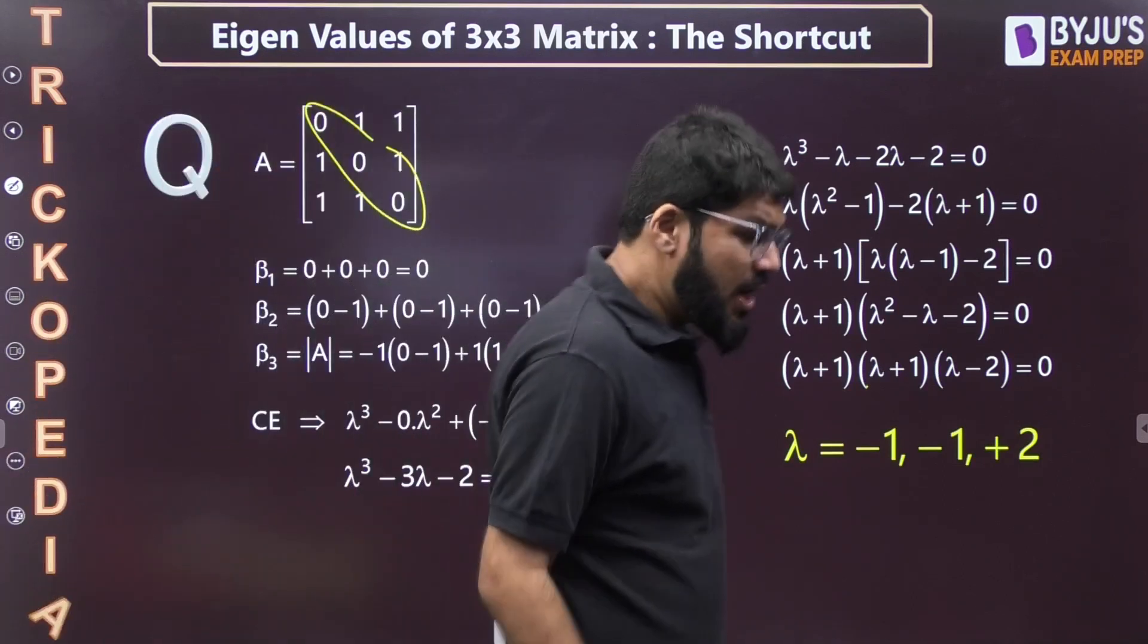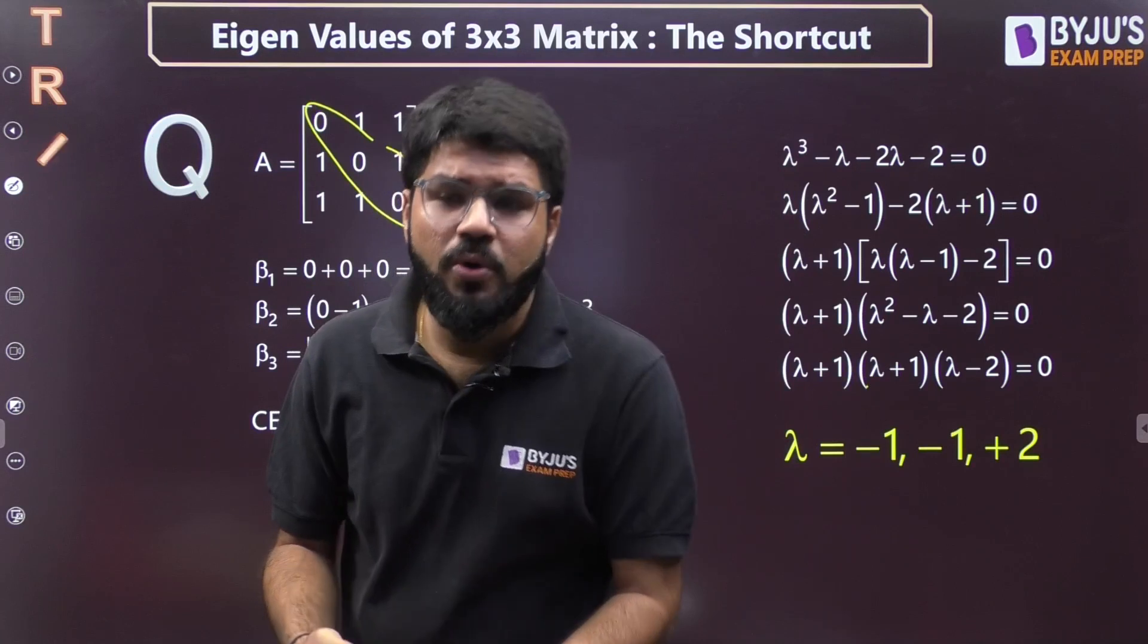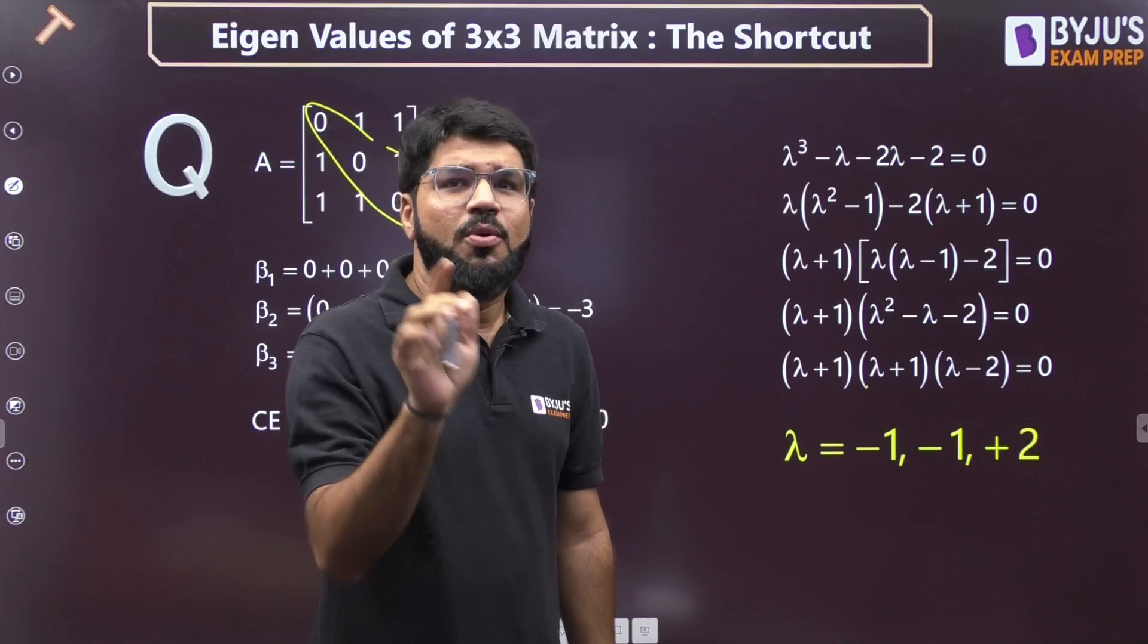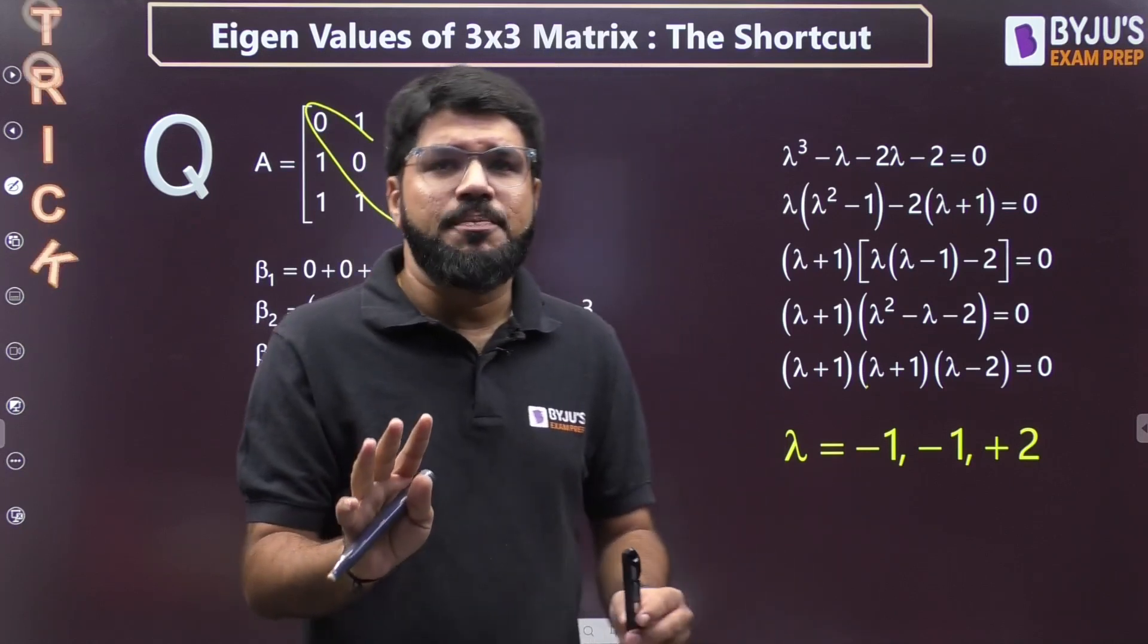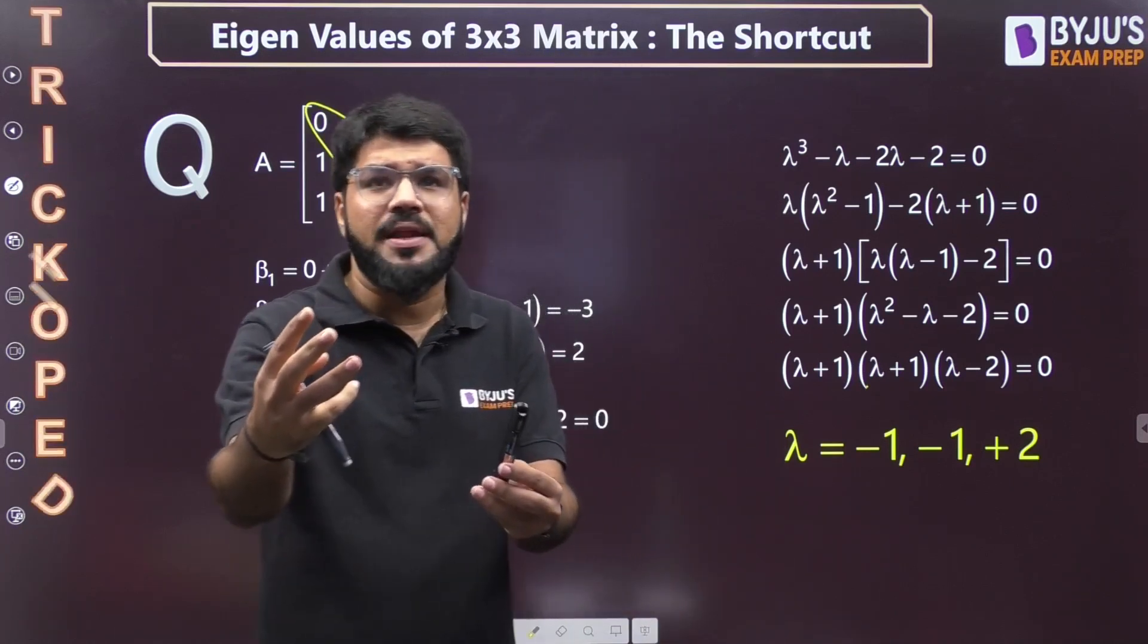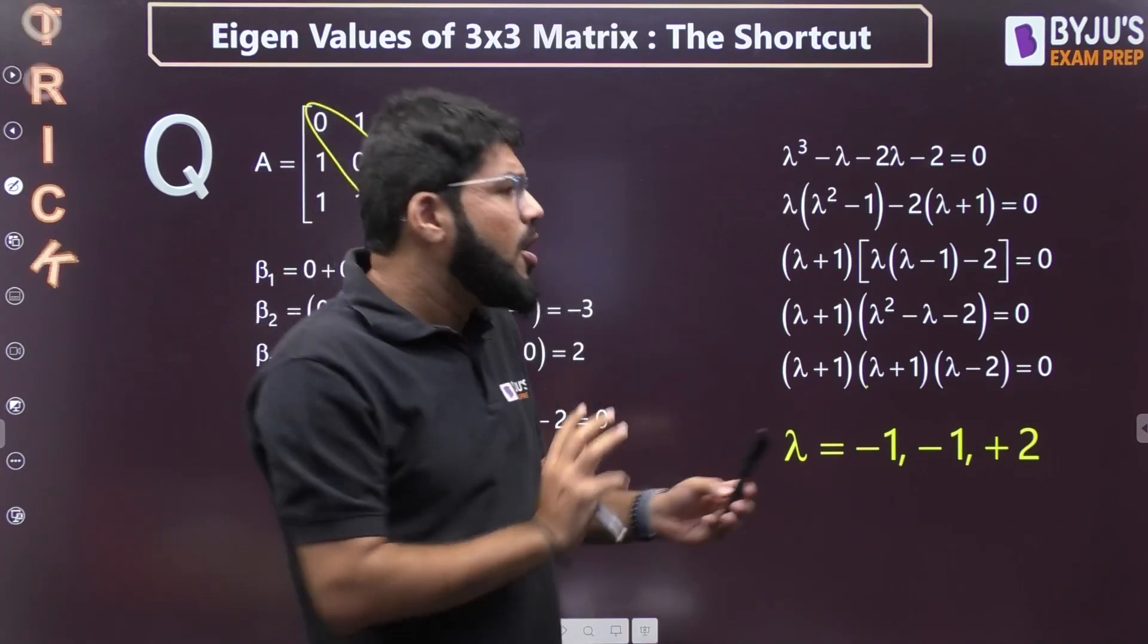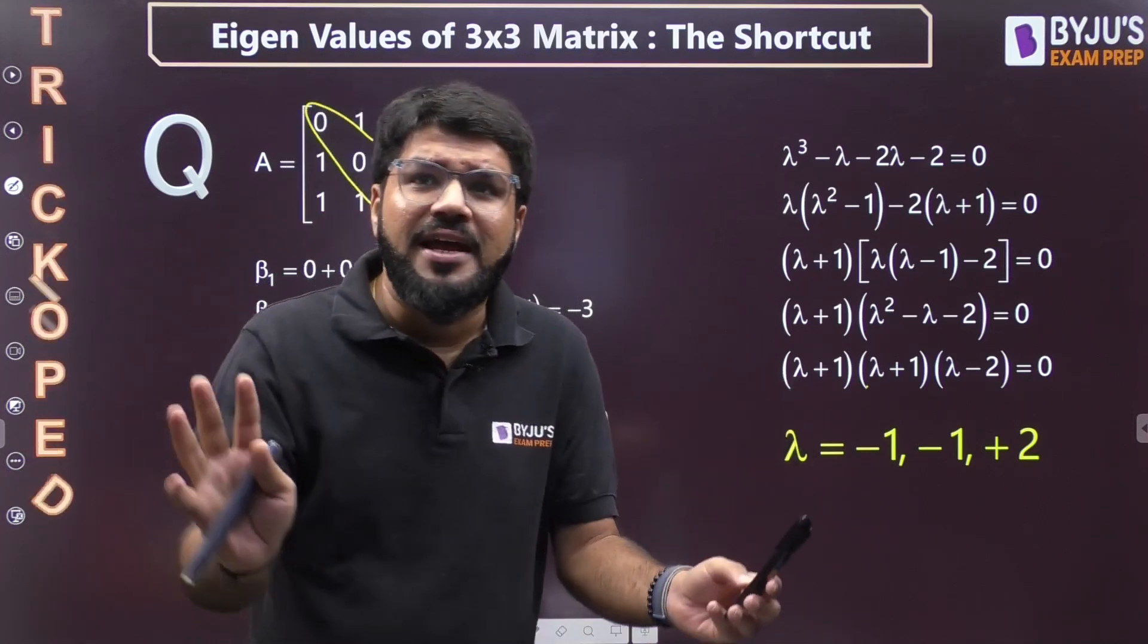There are several important properties also on which questions can be solved. I'll bring you those in small videos. The intent of this video was to show you that without applying any property, if you don't have options or you have a NAT question or need to find all eigenvalues, rather than finding |A - λI| = 0, we can directly find this.